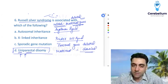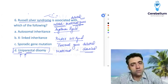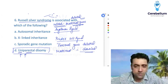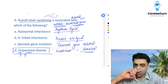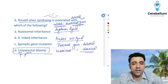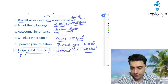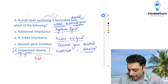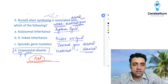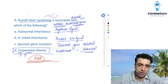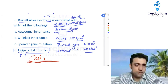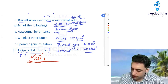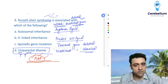The three important examples of uniparental disomy are Russell-Silver syndrome, Angelman syndrome, and Prader-Willi syndrome. The mnemonic is RAP — and we need to know two important points for each of these three conditions.